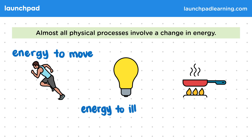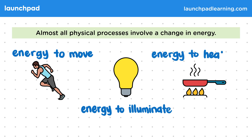Light bulbs need energy to illuminate, so when a bulb lights up there is a change in energy inside it. And when cooking we need energy to heat up food, so when frying something there is a change in energy in the food that cooks it. You won't be expected to recall these exact examples, but throughout the course you'll need to be comfortable identifying and explaining the energy changes in processes.